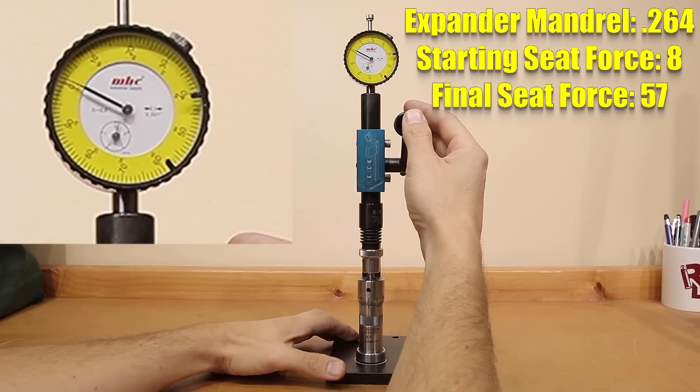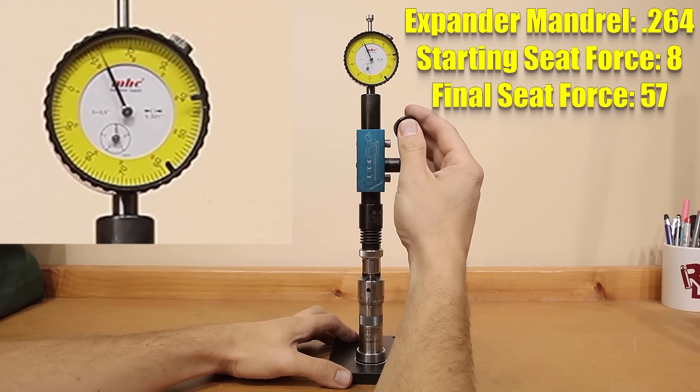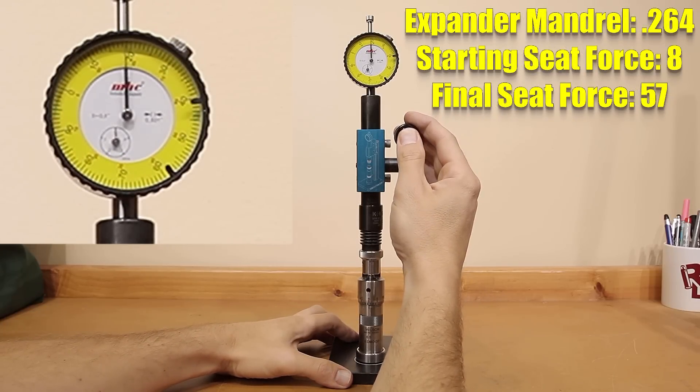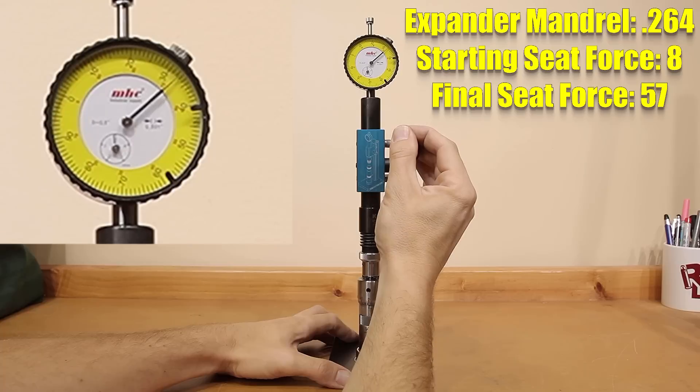Moving on to the 0.264 mandrel, our starting force was in the ballpark of 8 pounds, and our final seating force was again somewhere very close to 57 pounds.